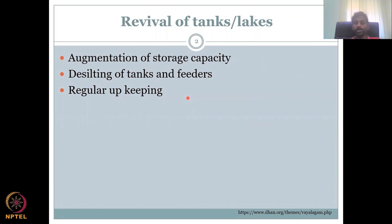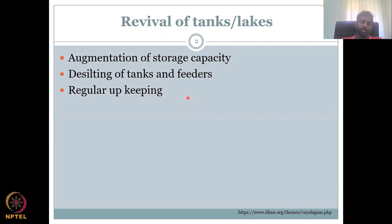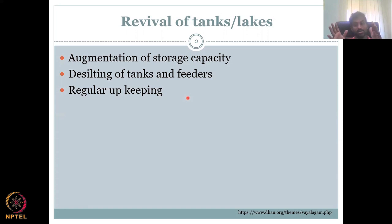Regular upkeeping is also essential — you always have to monitor the banks, embankments, and check dams. If you don't do maintenance and monitoring, they will fail. One of the big ponds supplying water for agriculture and domestic use on the outskirts of Chennai, the Chembrambakum Lake, broke. Once it broke, the entire city of Chennai was flooded. So it is very important to make sure the bunds and all infrastructure are regularly checked and maintained.